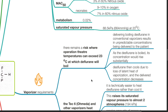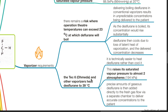Vaporiser requirements. There remains a risk where operating theatre temperatures can exceed 23 degrees Celsius, at which desflurane will boil. Delivering boiling desflurane in conventional vaporisers results in unpredictable concentrations being delivered to the patient. As desflurane is boiled, its concentration would rise substantially. Desflurane then cools due to loss of latent heat of vaporization and the delivered concentration decreases. The TEC-6 (Ohmeda) and other vaporisers heat desflurane to 39 degrees Celsius. It is technically easier to heat desflurane rather than cool it. This raises its saturated vapour pressure to almost 2 atmospheres or 194 kPa. Precise amounts of gaseous desflurane are then added directly to the fresh gas flow via a separate chamber to deliver accurate concentrations to the patient.